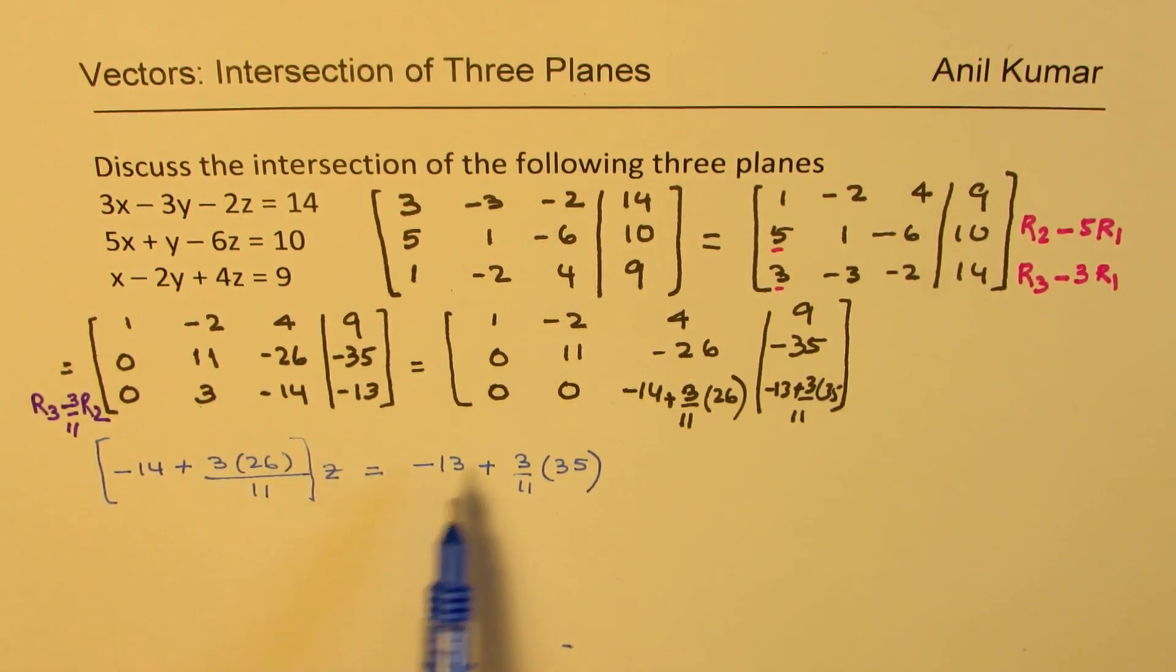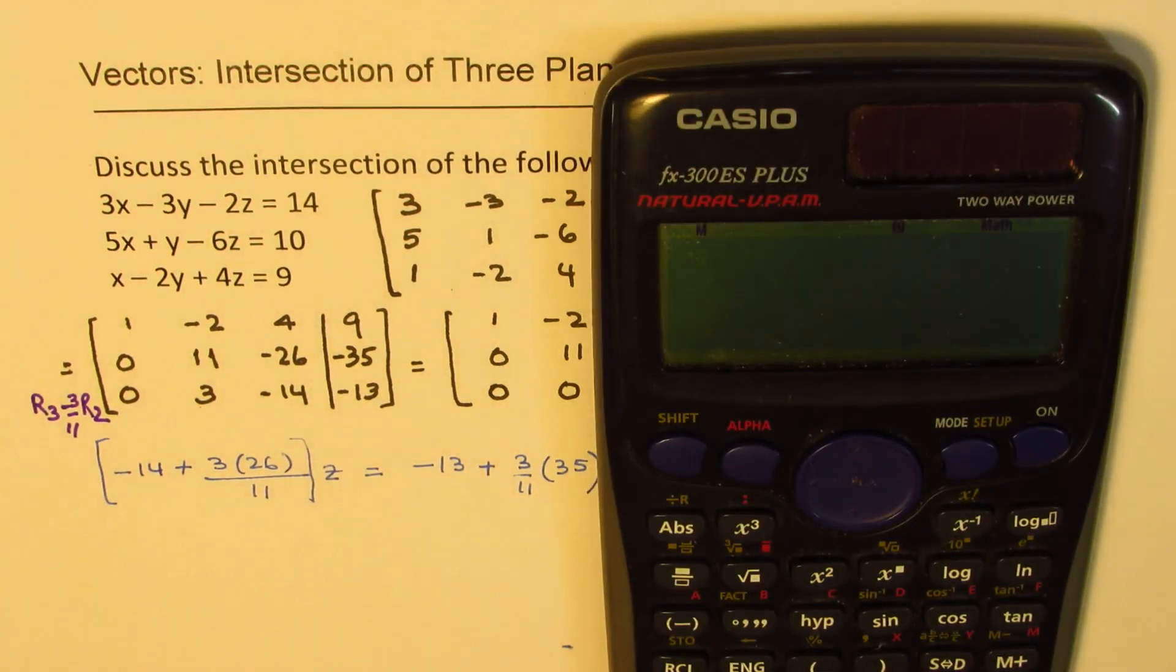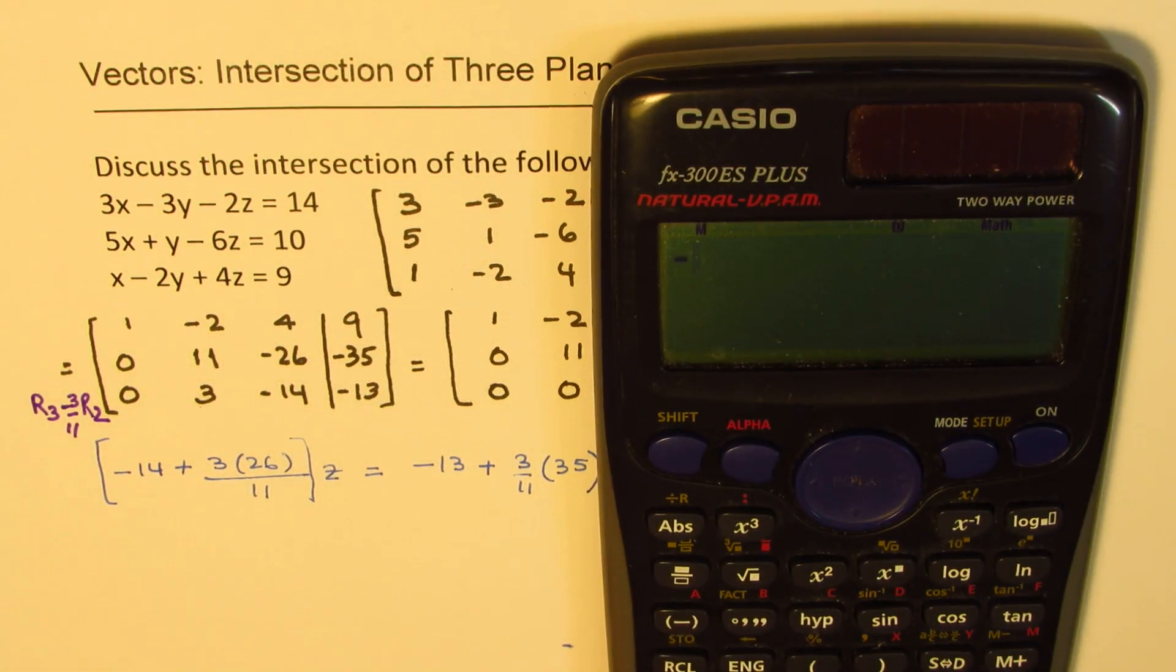So let's simplify this separately and then find the value of z. We could do it on calculator now. It's slightly more complicated. So 11 times, minus 14 plus 3 times 26 divided by 11, equals to.